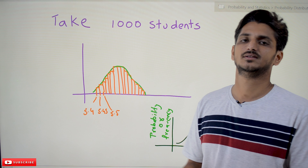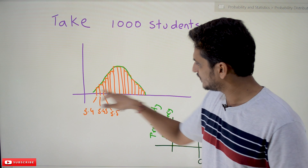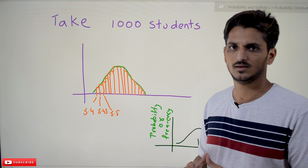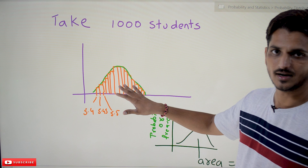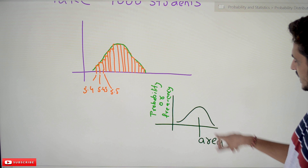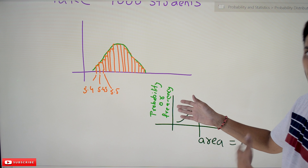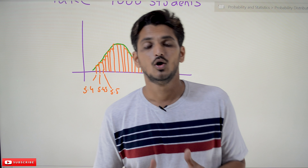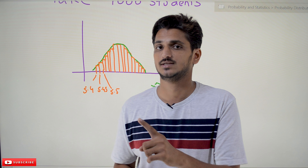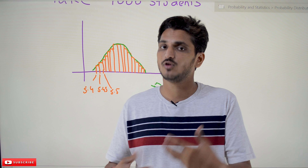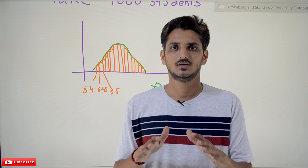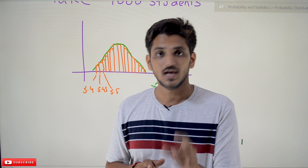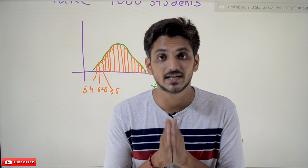Students may have any height between five and six feet — it's not compulsory to have values only at 5.4 or 5.6; those were just for understanding. The area under the curve should equal 1, and on the y-axis you can take frequency or probability values. If your data takes this bell shape, we go with normal distribution. In our next classes we will discuss the probability density function of normal distribution and how it changes graphically. If you have any questions, please post in the comment section below. Thanks for watching — please subscribe and press the bell icon for the latest updates.